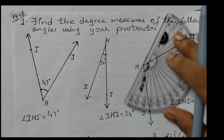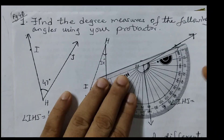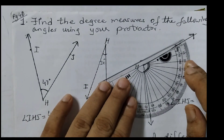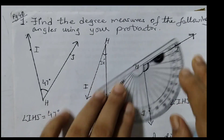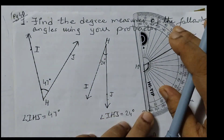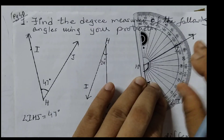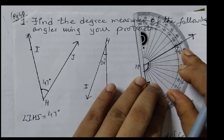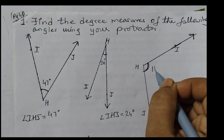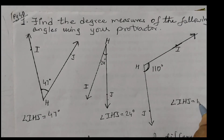Next one — we can place the protractor either way; this is the center and this is the baseline. We'll place it like this and this is 110 degrees. You can get 109 or 110 — so angle IHJ is 110 degrees.